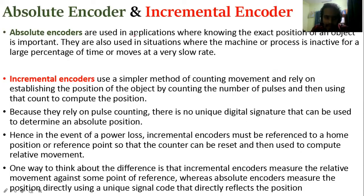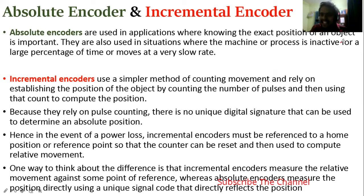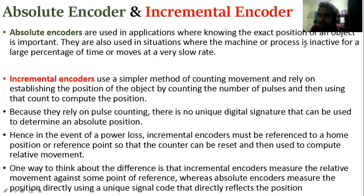Absolute encoders are used in applications where knowing the exact position of an object is important. They are also used in situations where the machine or process is inactive for a large percentage of time, or moves at a very slow rate.